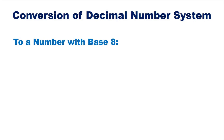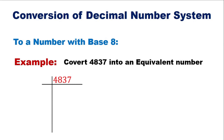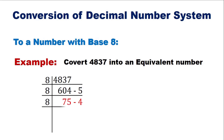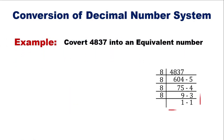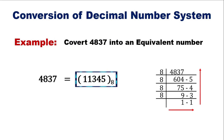We will consider one more example. In this example, we have a question. We divide this number and find the quotient and remainder at each step. Reading the remainders from bottom to top gives us the final answer. This is the lesson of this session.